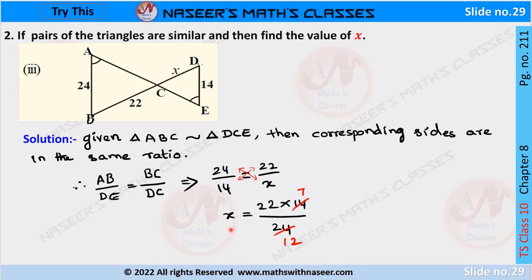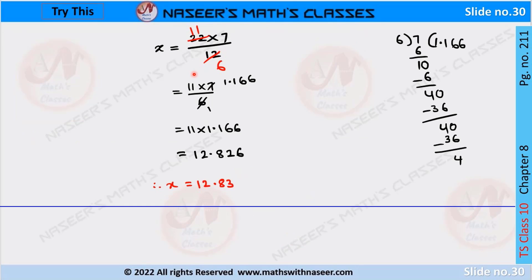After cross multiplication, we can write x is equal to 22 into 14 by 24. We cancel 2 sevens are 14, 2 twelves are 24. Then we cancel further: 11 into 7 by 6. We cancel 6 into 1.166. Then we get 11 into 1.166, and after multiplication we get 12.826. Therefore x is equal to 12.83.